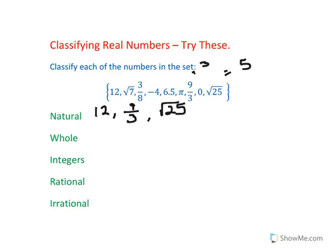And whole numbers are natural numbers plus 0. So we have 12, 9 over 3, square root of 25, and 0.